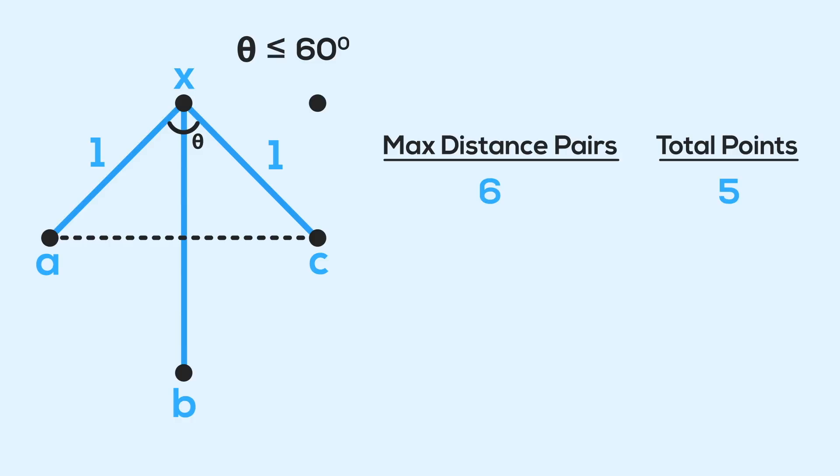So now we know, for any counterexample, there's always going to be that point that's part of three pairs. We know the greatest angle made by the line segments will be 60 degrees or less, and therefore there must be one line segment, quote, in between the outer two.